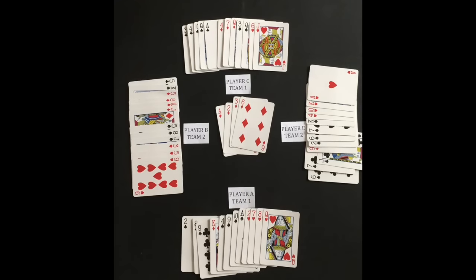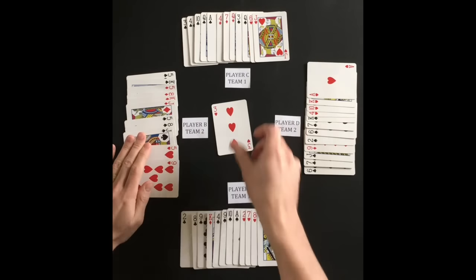Player B wins the first trick with the highest ranking card. The player that wins the trick leads the next trick.